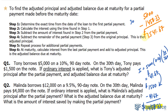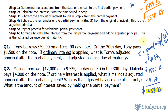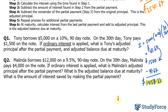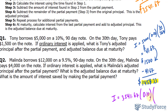Step five is to repeat the process for additional partial payments — we don't have to do that here since we only had one partial payment. So at maturity, we calculate the interest from the last partial payment and add it to the adjusted principal. That means I'll repeat the interest calculation using $3,541.67.